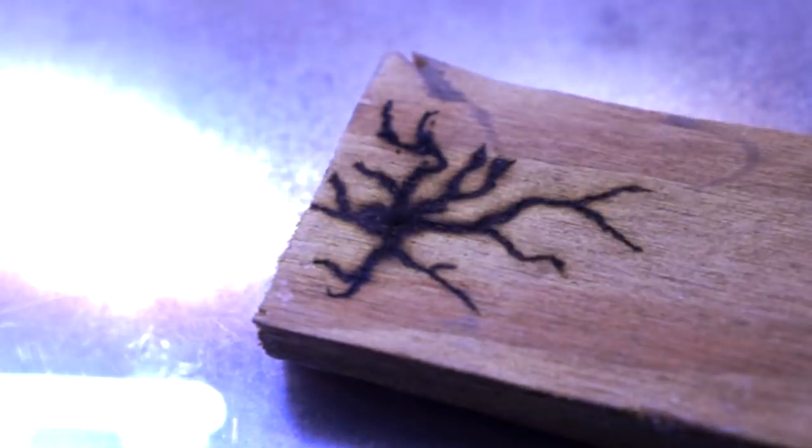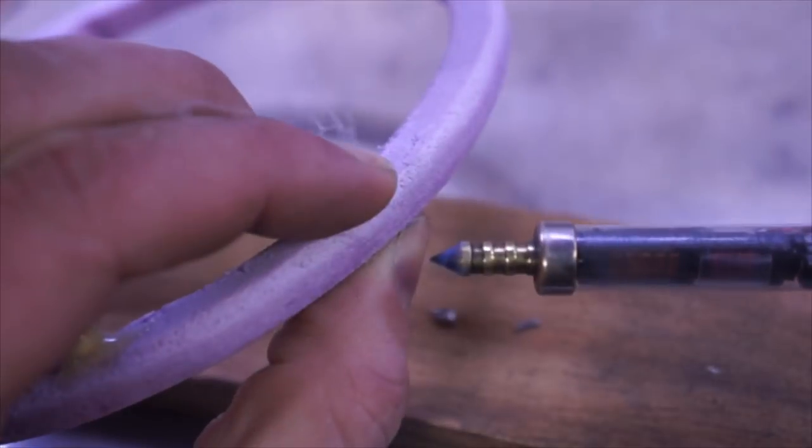One of the coolest things about plasma is how hot it actually is. Here we can see it melting thin tungsten wire.